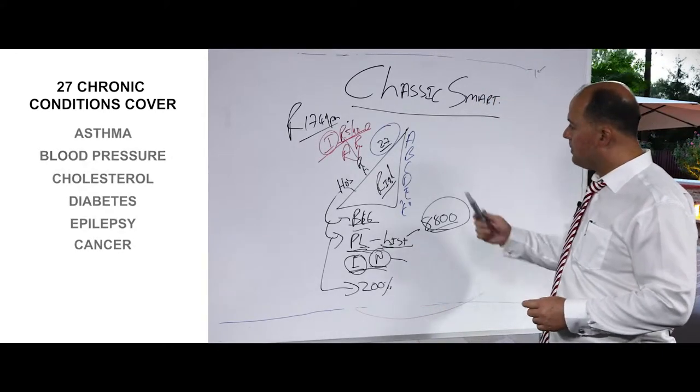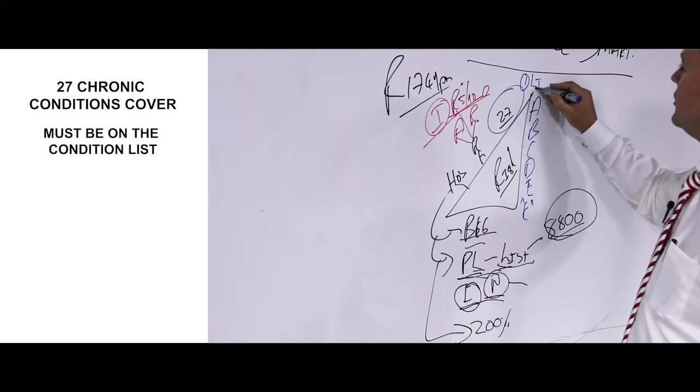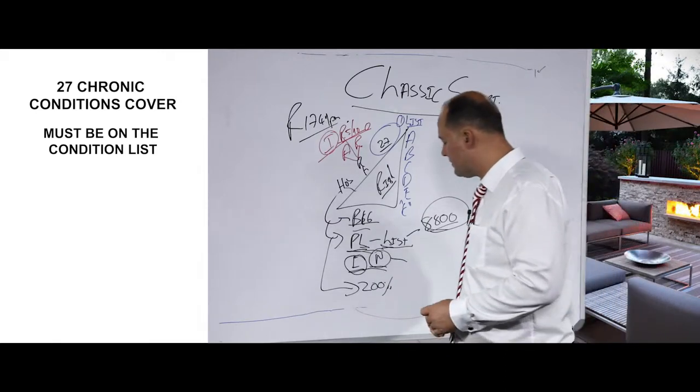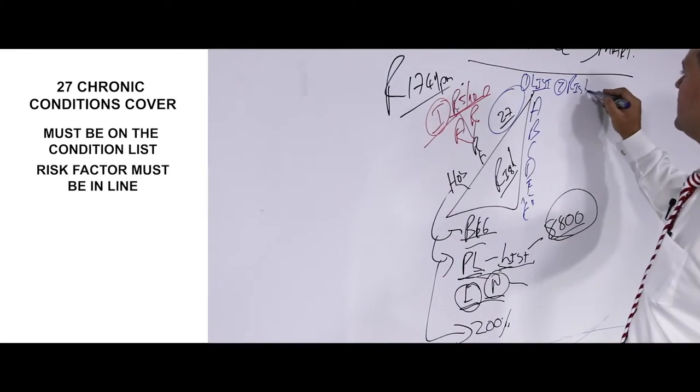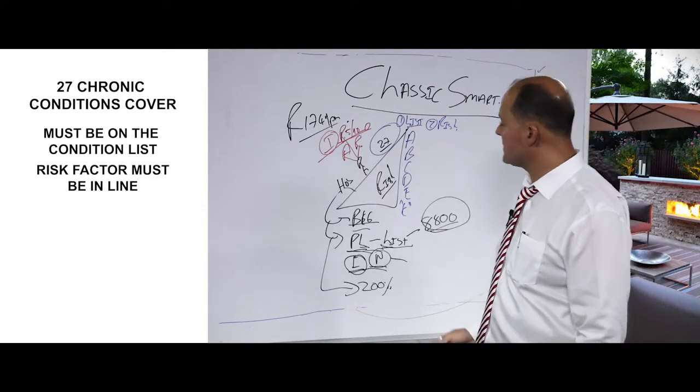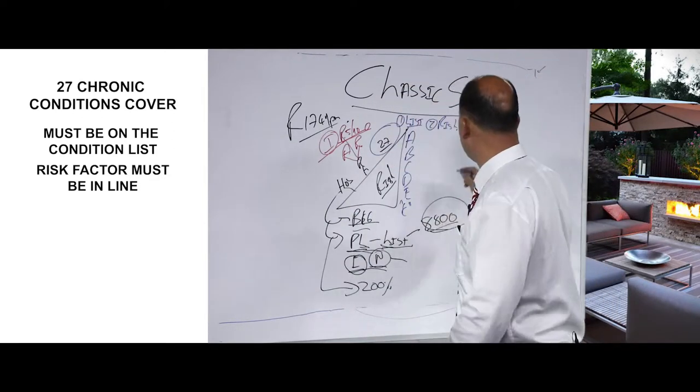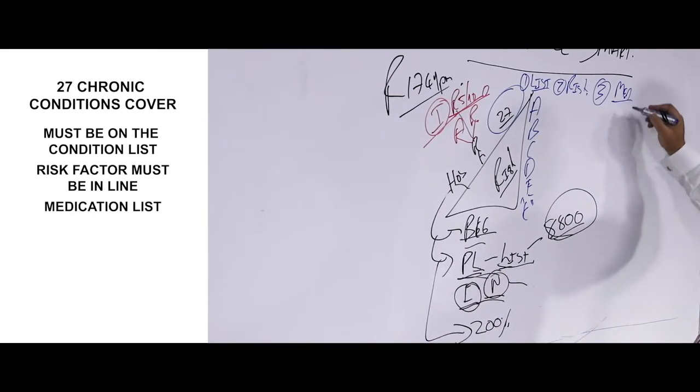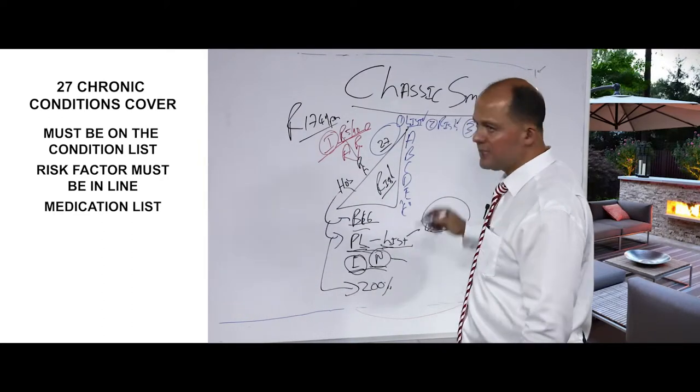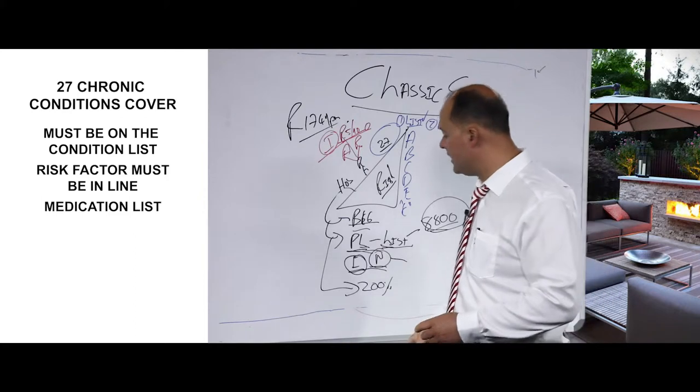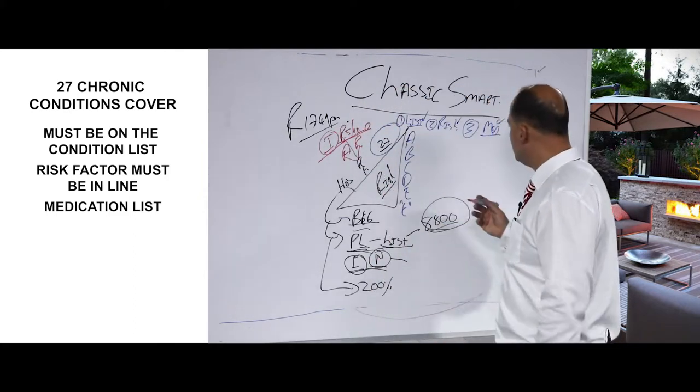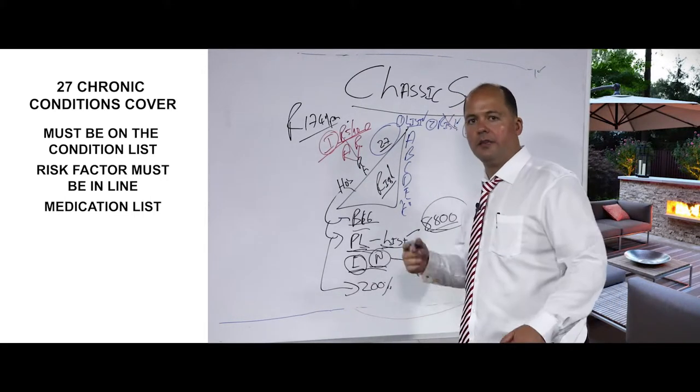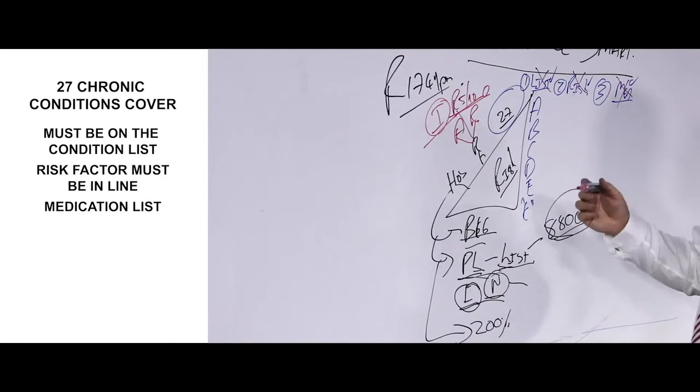In terms of this benefit, number one, my condition must be on the condition list as prescribed by government. It must be on the list of 27 chronic conditions. Number two, my risk factor must be in line. They've got certain criteria with which they measure it. If you've got asthma, do you use one asthma pump a month or one asthma pump a year? And number three, this plan only has a medicine formulary list. So if your condition is on the list, your risk factor is in line, and you use medication on the formulary list, the medication will be covered. If you do not use the medication on the list, the medication will not be covered.